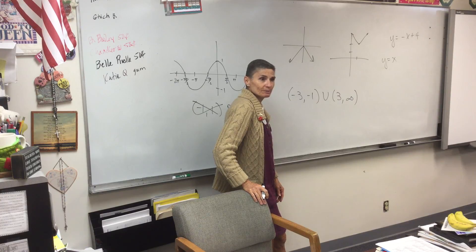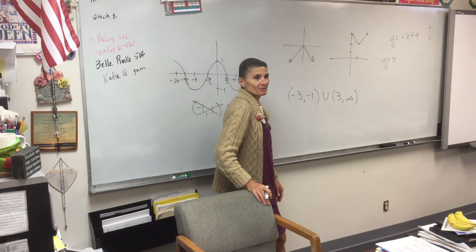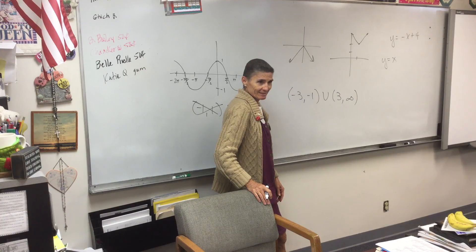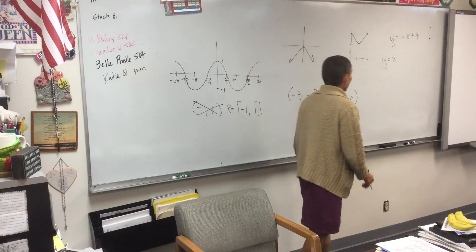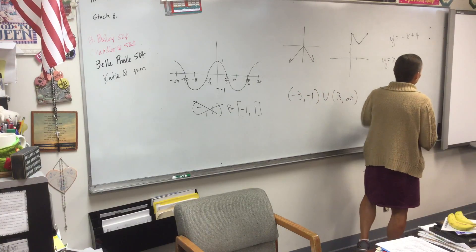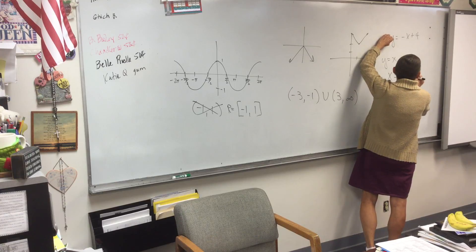Who remembers the test of symmetry for the identity line? Yes, indeed you do. He didn't say it? You just knew it? I don't know what's going on back there. He's right. You switch the X and the Y. So when I do that, I'll have X equals negative Y plus four.